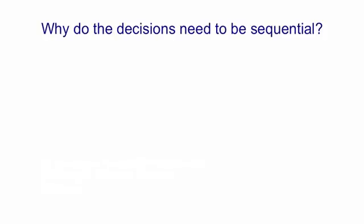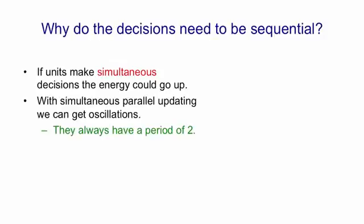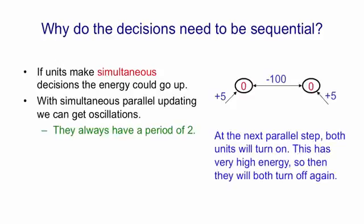Why do the decisions need to be sequential in a Hopfield net? The problem is that if units make simultaneous decisions they could each think they were reducing the energy but actually the energy could go up. With simultaneous parallel updating we can get oscillations which always have a period of two. Here's a little network where the units have biases of plus five and a weight between them of minus 100. When both units are off the next parallel step if we update them both at the same time will turn both units on, because they each think they can improve things via the bias term. But as soon as you do that you get this minus 100 and so you've actually made things much worse. So then at the next parallel step both units will turn off again.